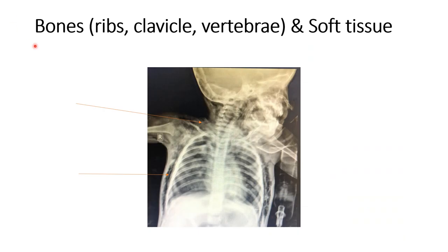Finally, we comment on the bones and soft tissue. For bones, we assess the clavicle, ribs, and vertebral column — any abnormality found should be commented on. Then we check the skin and subcutaneous tissue. In this X-ray you can see there is air present in the subcutaneous tissue of the chest and neck — this is subcutaneous emphysema.